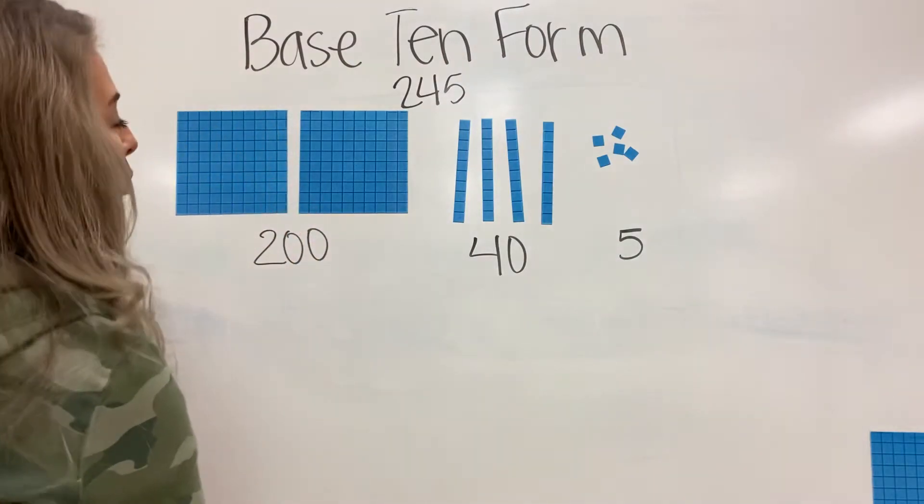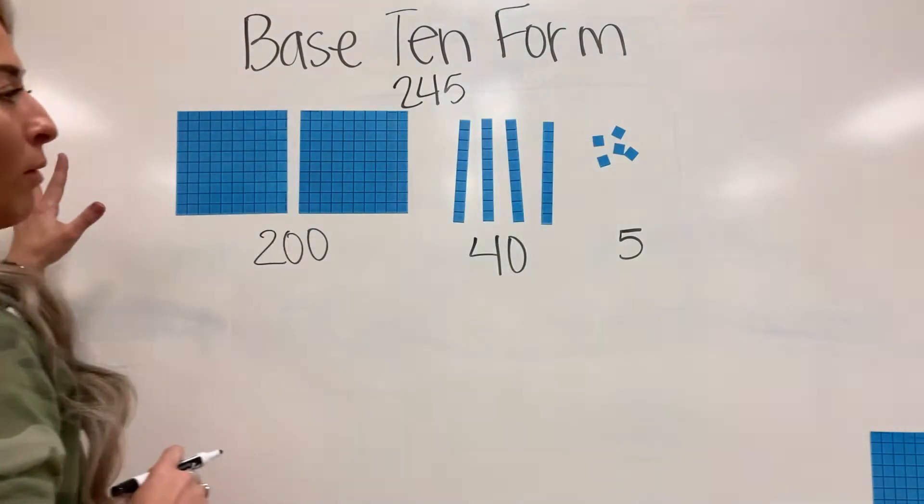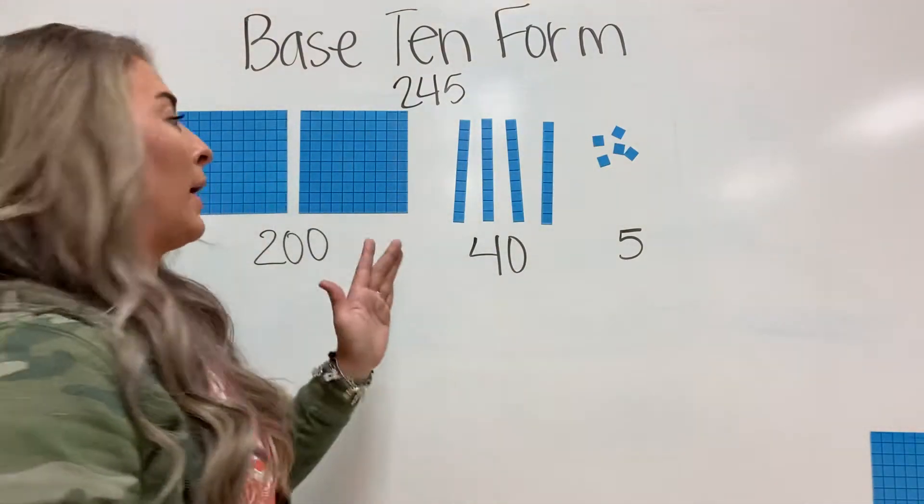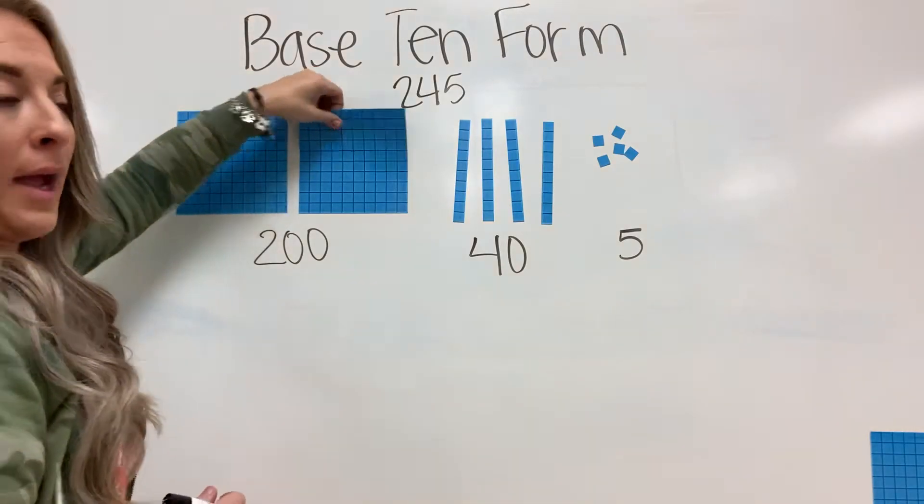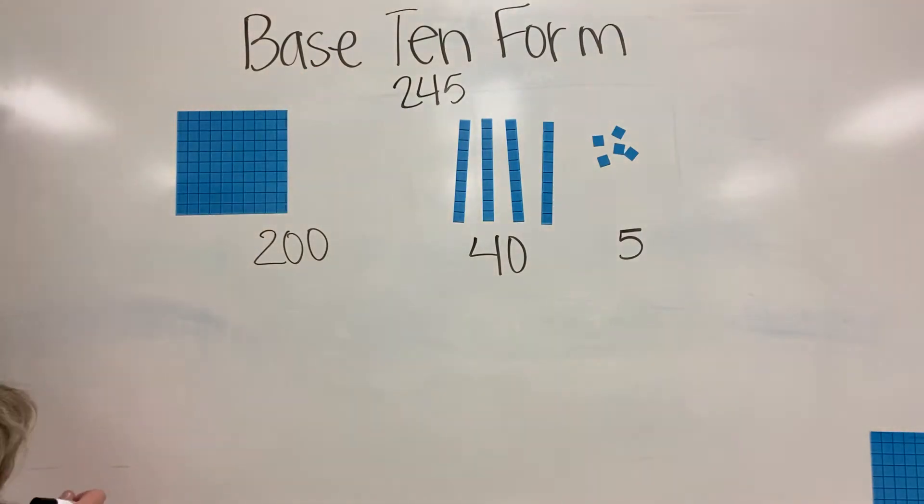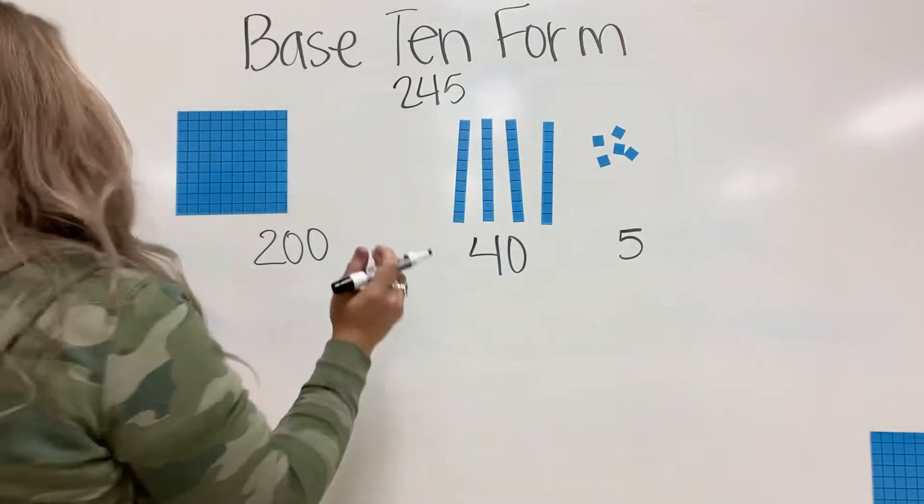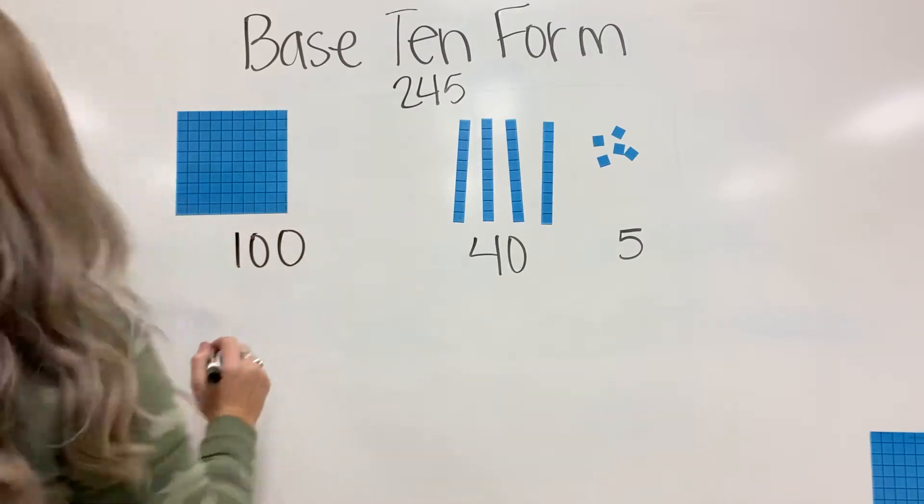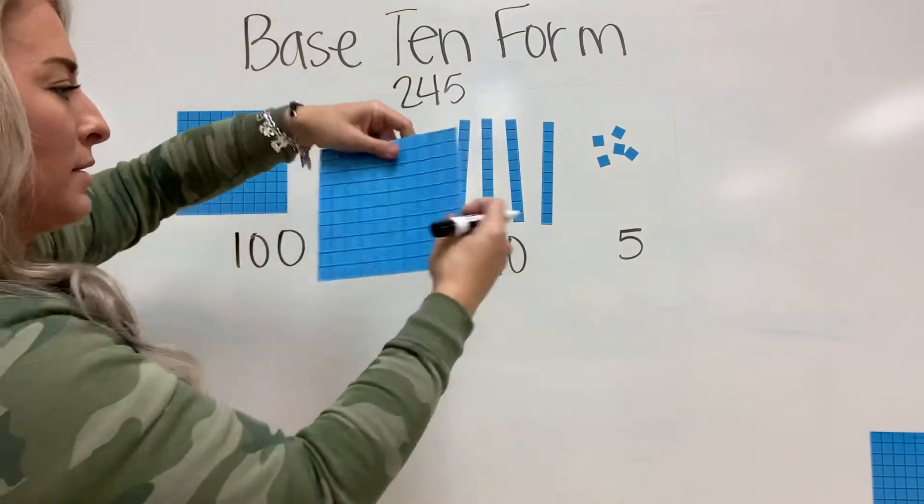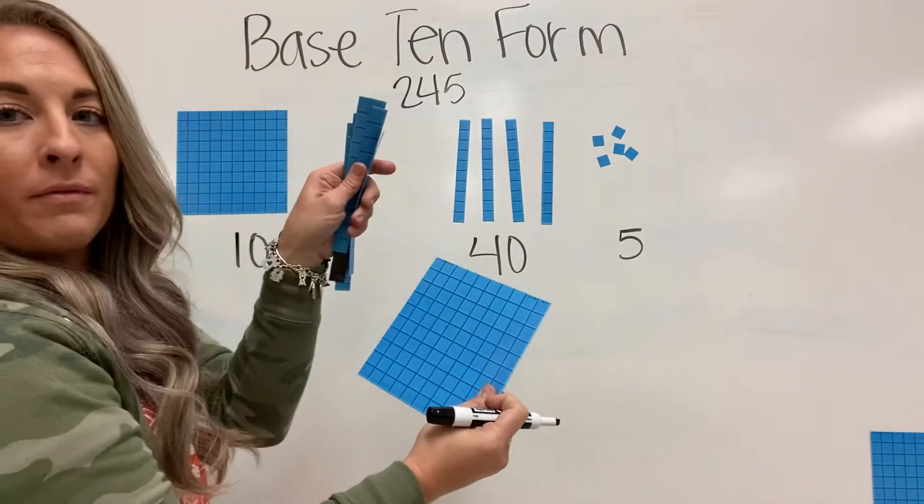So for today, we're going to represent 245 in other ways. This is the most basic way, but it is not the only way. For example, I want to take a hundreds block out. Since I took a hundred out, I must now replace my hundreds block with a hundred of something else. So I'm going to regroup this into tens. I'm taking this out and trading it for 10 of these.